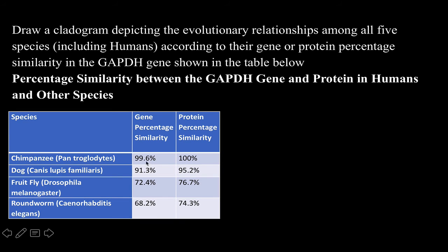Compared to humans, humans share 99.6% gene similarity and 100% amino acid sequence similarity for the GAPDH gene with chimpanzees. That's how close humans and chimpanzees are. Then the dog shares 91% DNA similarity and 95% amino acid sequence similarity, and so on. So you can see the most closely related here, and then you get further related, further, and then further - roundworms. So even roundworms have genes that are similar to ours.